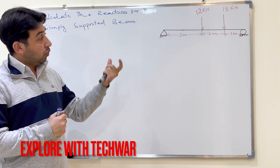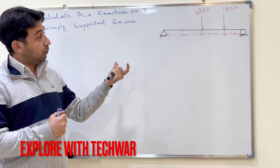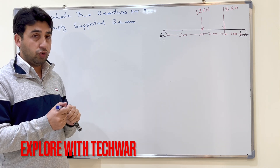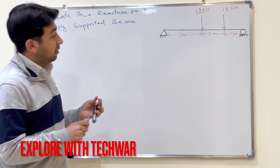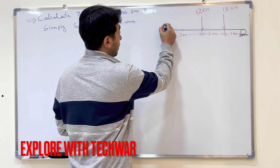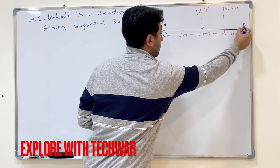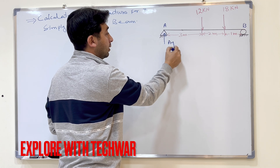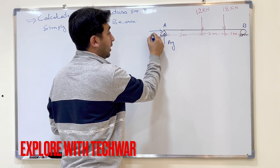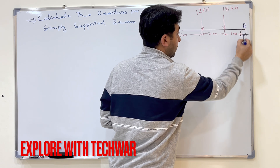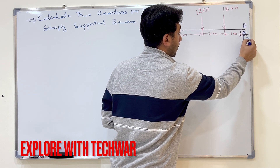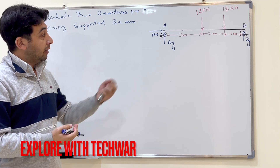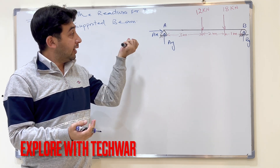We will find the reaction forces on both supports. As we saw in the previous video, there are two reaction forces on the pin support — let's call this point A — which gives us AY and AX. At point B, the roller support, we have only one reaction force: BY.